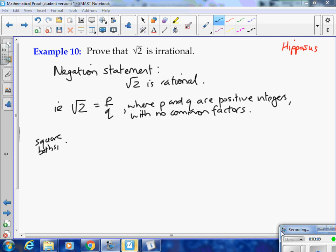Square both sides. We could say that 2 is therefore p² over q², and if we multiply through by q², we get 2q² = p². Now if that's the case, 2q² = p², because p² is 2 times the value